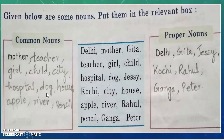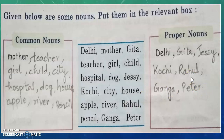It can be Delhi, Kolkata, Bangalore, Chennai, Mysuru — any city. So the noun city is common because it is common to all the cities. House — common noun. Apple — common noun. River — common noun. Rahul — proper noun, because Rahul is a name of a particular boy or person. Pencil — common noun. Ganga — proper noun. Peter — proper noun.